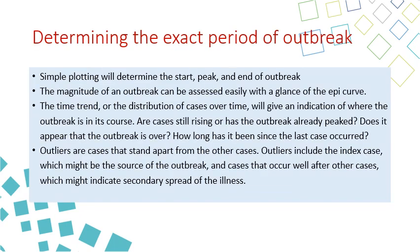For determining the exact period of outbreak, you simply plot the epidemic curve, which has a start, peak, and end. The start is the first date of the outbreak, the end is the last date, and the peak is the highest number of cases during the outbreak. The magnitude of the outbreak can be assessed easily just by looking at the epidemic curve with the number of cases on each bar.